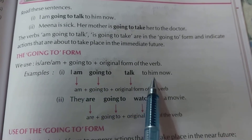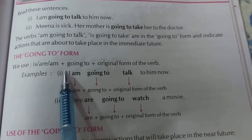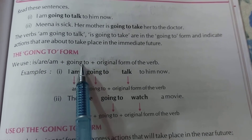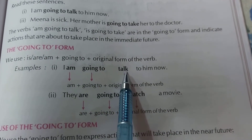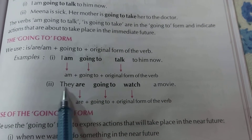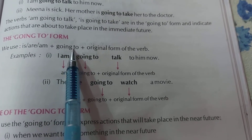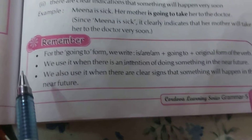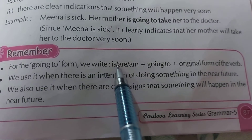First example: I am going to talk to him now — meaning I am going to talk to him. Here 'am' stands with the subject 'I', followed by 'going to', then the original form of verb 'talk'. Second example: They are going to watch a movie. There is a plural subject, so we use 'are', then 'going to', then the original form of the verb.